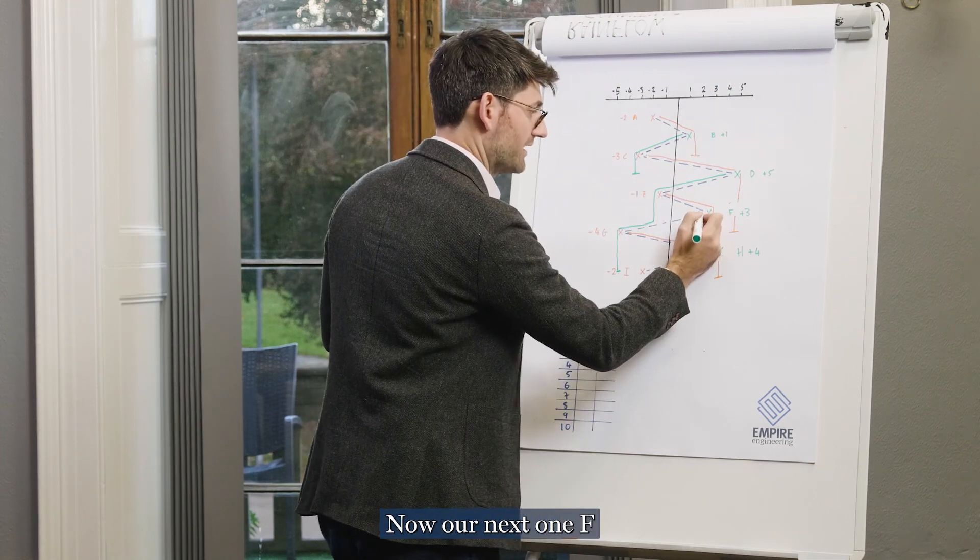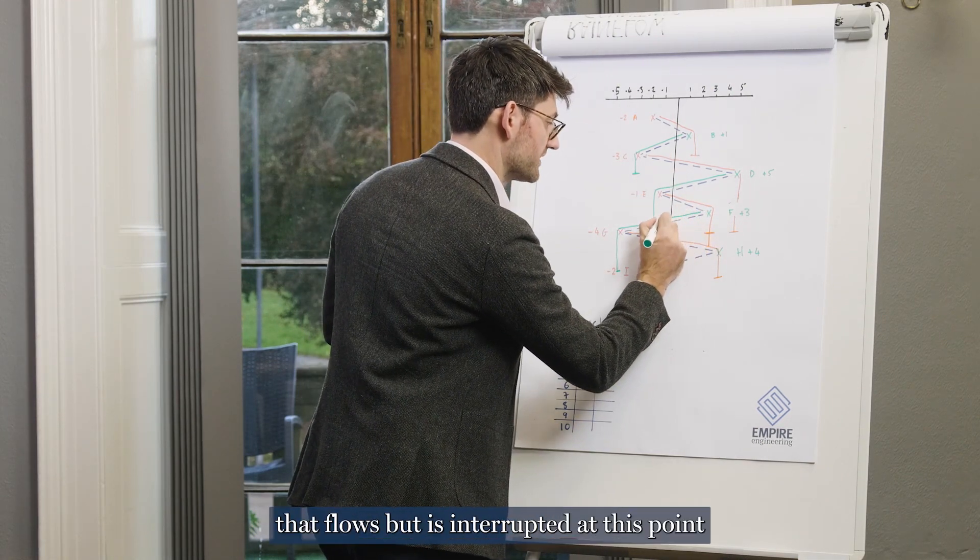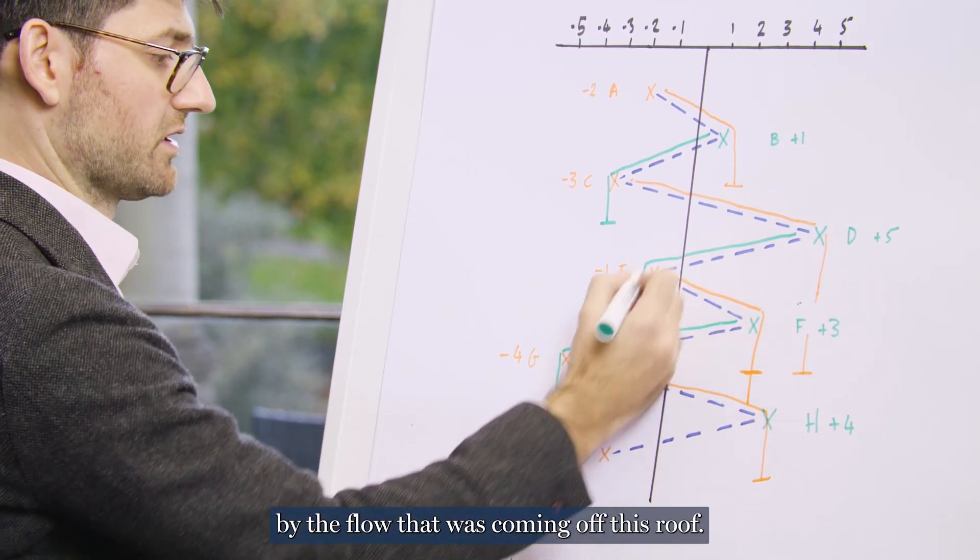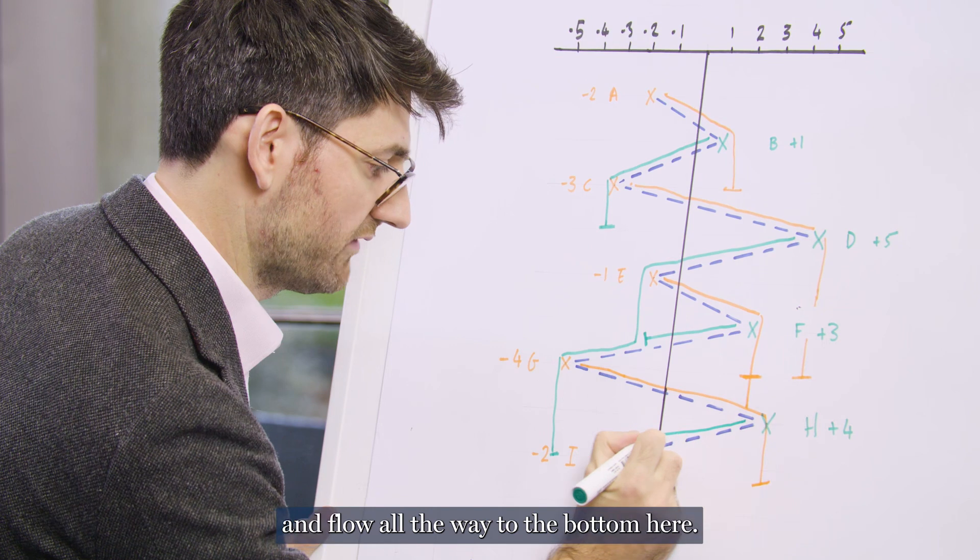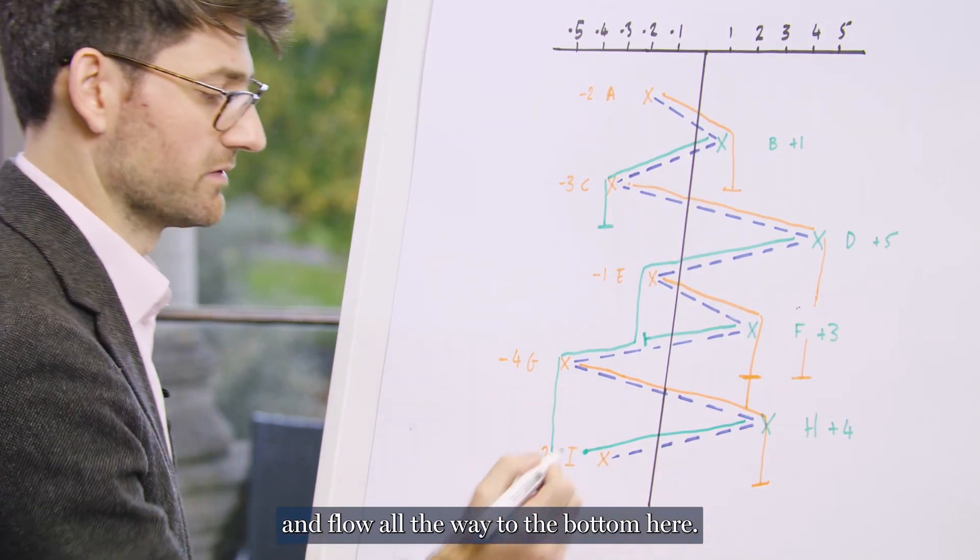Now our next one F, that flows but is interrupted at this point by the flow that was coming off this roof. And lastly, we start at H and flow all the way to the bottom here.